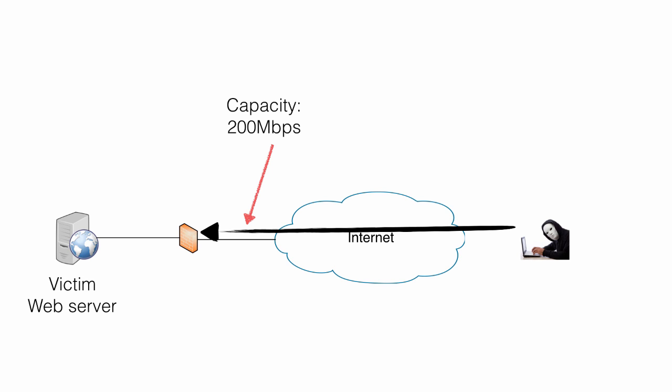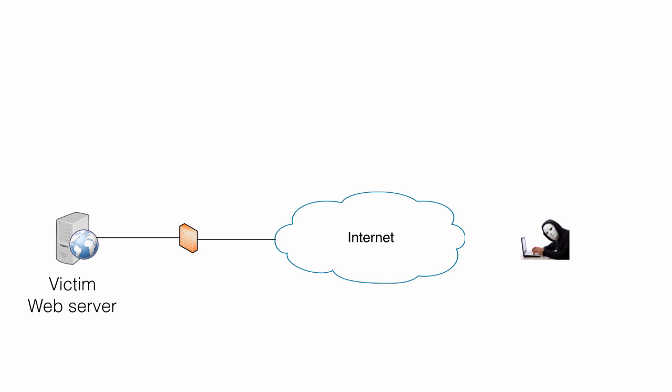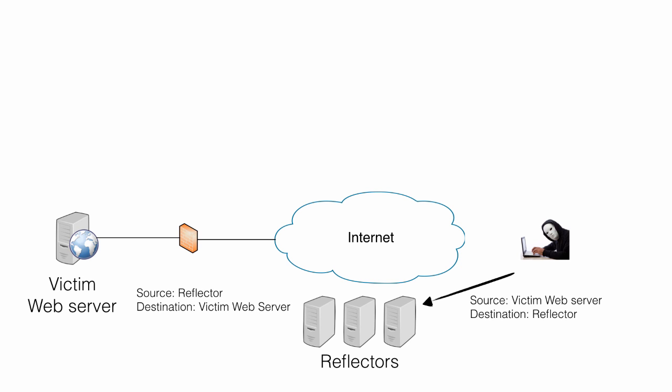Instead of generating this traffic directly to the victim web server, he generates traffic to reflectors. The reflectors are servers on the internet that have no intention to be part of any DoS attack. To be able to do a reflective DoS attack, the attacker uses UDP, which is stateless. He sends traffic to the reflector using the victim web server as the source address for the traffic, which makes the reflectors believe that the traffic came from the web server, and the reflector will send replies back to the web server.